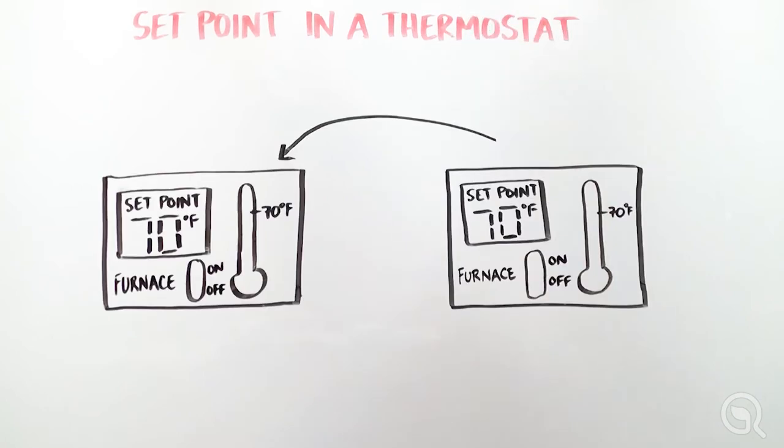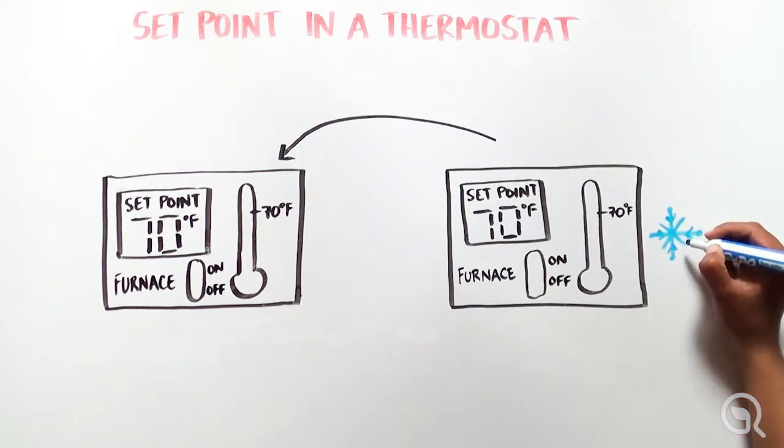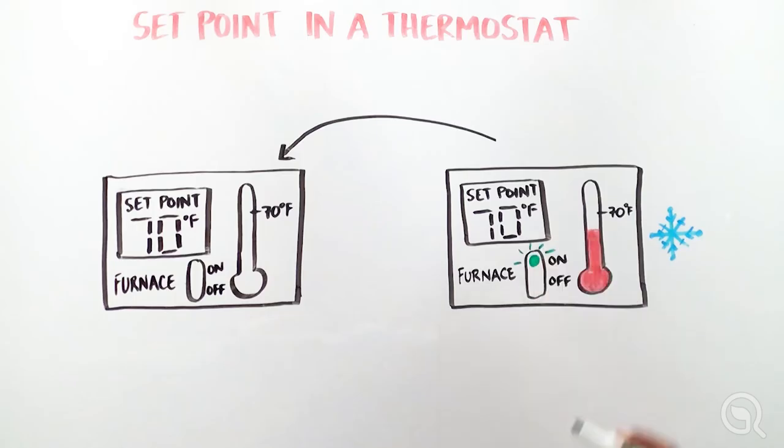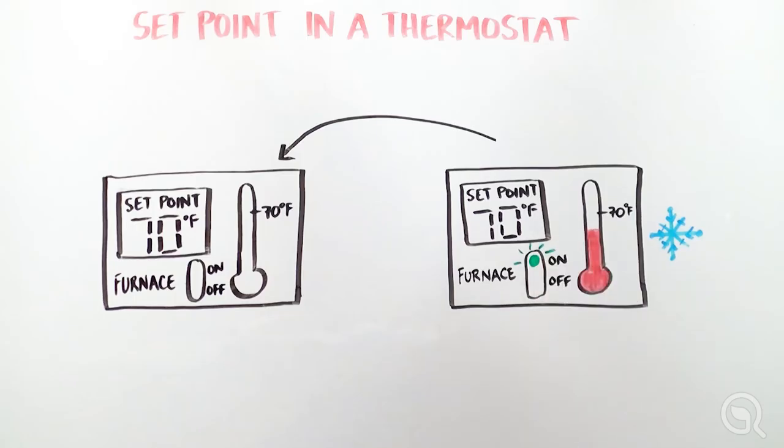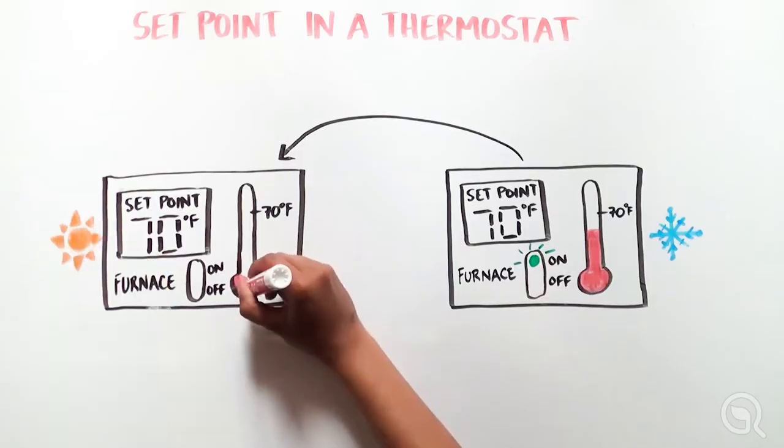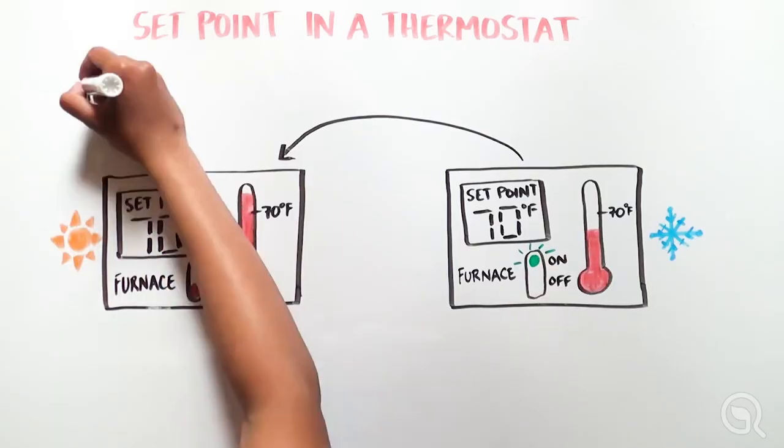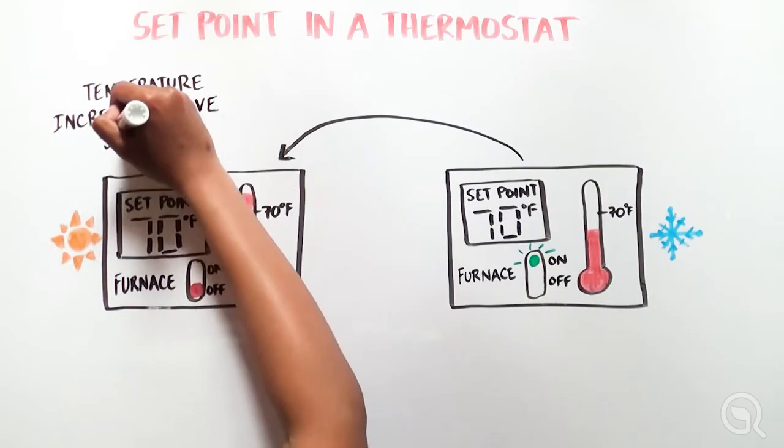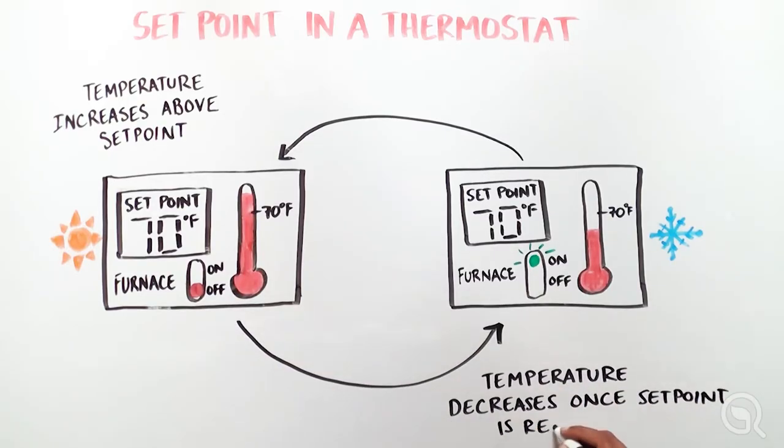A simple way to think about a set point is how we use a thermostat to maintain house temperature. Once you set the temperature, the system monitors when it gets too cold and turns the furnace on to heat the house. When the furnace heats the house to the desired temperature, your set point or above, the furnace shuts off to cool the house back down. This is a constant back and forth process to ensure the desired temperature is always maintained.